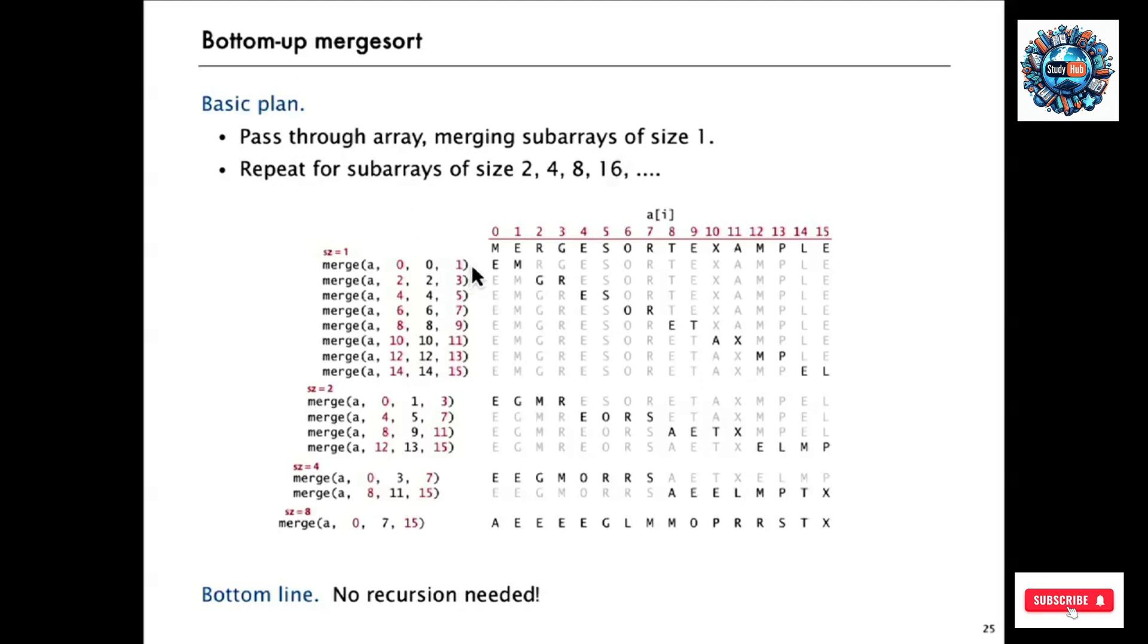So as you can see in this example, we start out by merging the first two subarrays of size 1 to make an array of size 2 that's sorted. And then do the same thing for the next two elements and the next two and so forth until eventually instead of 16 individual elements, we have eight sorted subarrays of size 2.